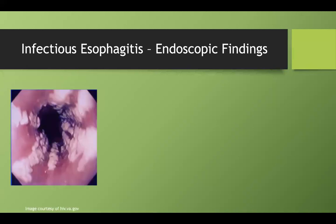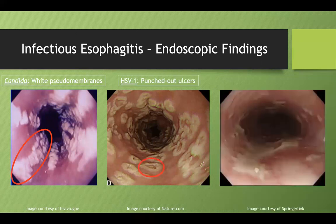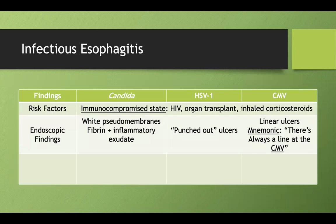Looking at the endoscopy pictures: the fibrin and inflammatory exudate — white pseudomembrane — is Candida. Here we have many punched-out ulcers, which is HSV1. And the last one is linear ulcers for CMV. I've never seen a linear ulcer EGD picture on a question bank, but I have seen them described many times — for example, in an organ transplant patient. Remember the mnemonic: there's always a line at the CMV.